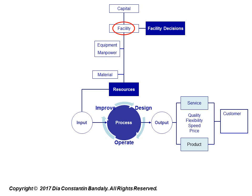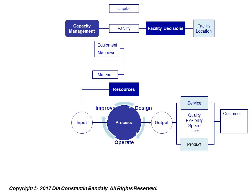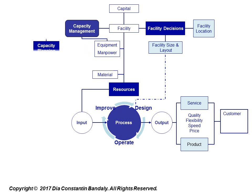Facility decisions determine the long-term capacity of the firm. A variety of OM tools are used to find the best location for the facility and to design the layout that best serves the process used. While a facility is a fixed capacity component, equipment and manpower are the variable capacity components. Operations managers make short and medium-term capacity planning based on varying levels of equipment and manpower utilization.